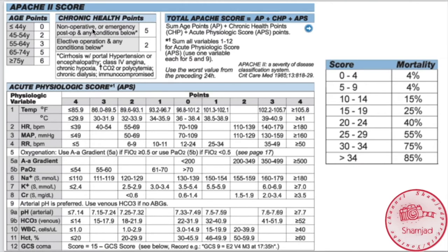For chronic health points, if the patient is non-operative or emergency post-op with any of the following conditions — cirrhosis with portal hypertension, encephalopathy, Class 4 angina, chronic hypoxia, increased CO2 or polycythemia, chronic dialysis, or immunocompromised — the score will be 5. If the patient is an elective operation with any of those same conditions, the score will be 2. So emergency post-op or non-operative patients score 5, while elective operation patients score 2.